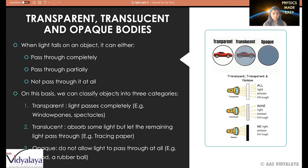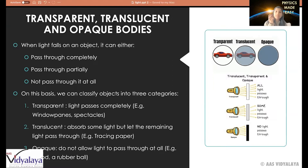Transparent objects are essentially objects through which light passes through completely. A transparent object can be a window pane, spectacles, or even the scale that I'm using — light passes through completely and we can see clearly on the other side of the object.